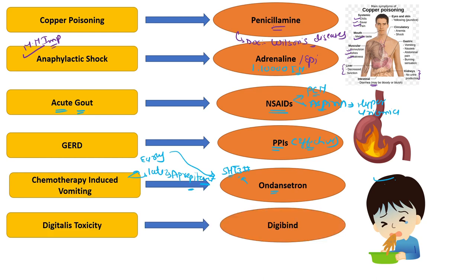For digoxin toxicity, we give the drug Digibind. Digibind is a monoclonal antibody produced by recombinant DNA technology. When digitalis toxicity occurs, Digibind binds to the digitalis, preventing it from binding to its receptor, so the toxicity is treated.